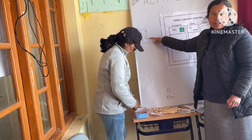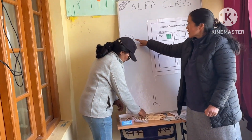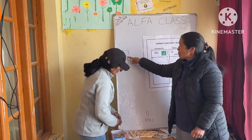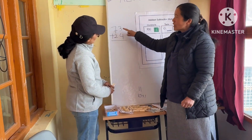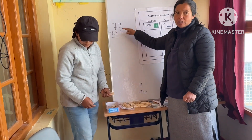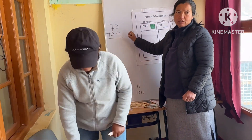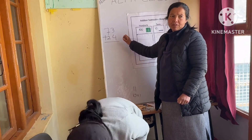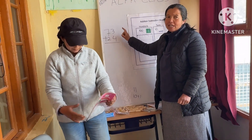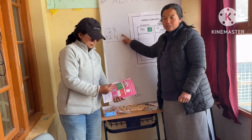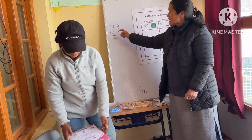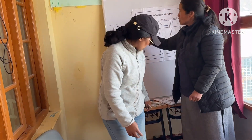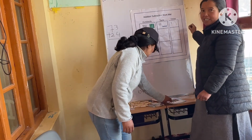This is 73 plus 24. How much is the addition and subtraction? One. One spread. One spread. One, two, three. How much is it?